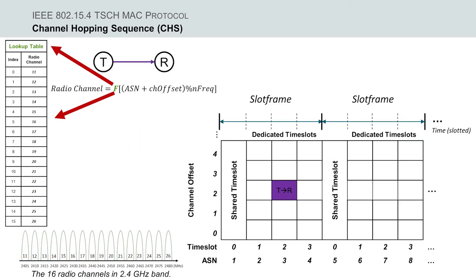And finally, F is a lookup table function that translates the results from the operation to actual radio channel, from radio channel 11 to 26, in 2.4 GHz band.